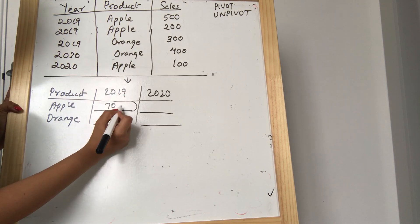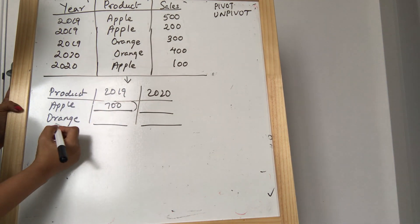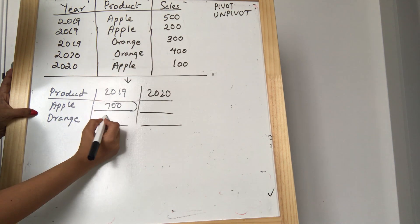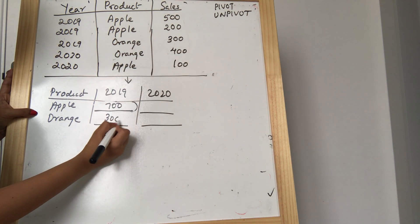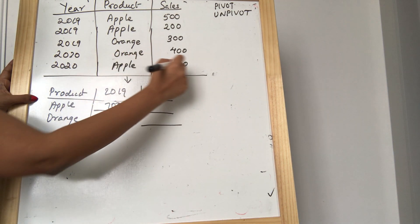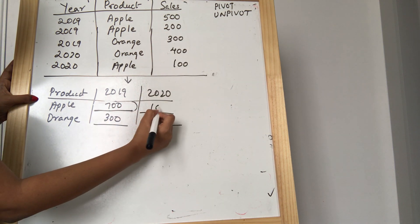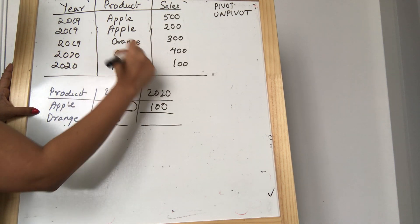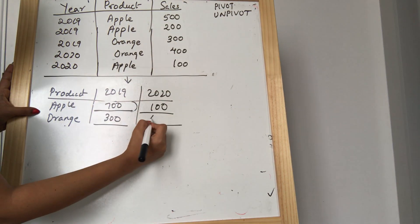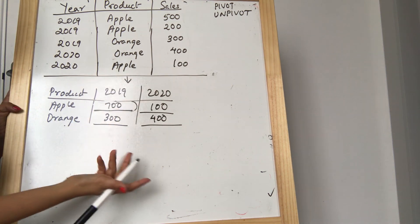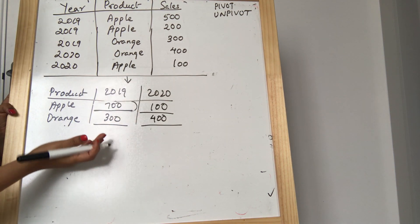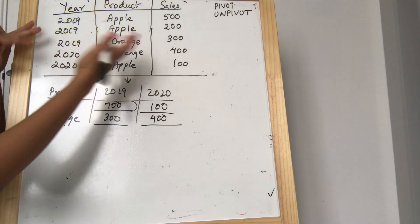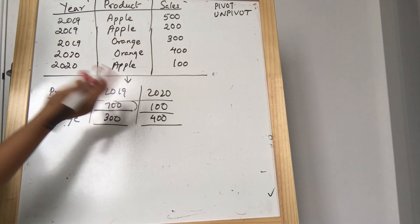The sum of sales for apple for 2019 is 700. For orange for 2019 it is 300. For apple for 2020 it is 100. And for orange for 2020 it is 400. So this is the pivot output that I am looking for.